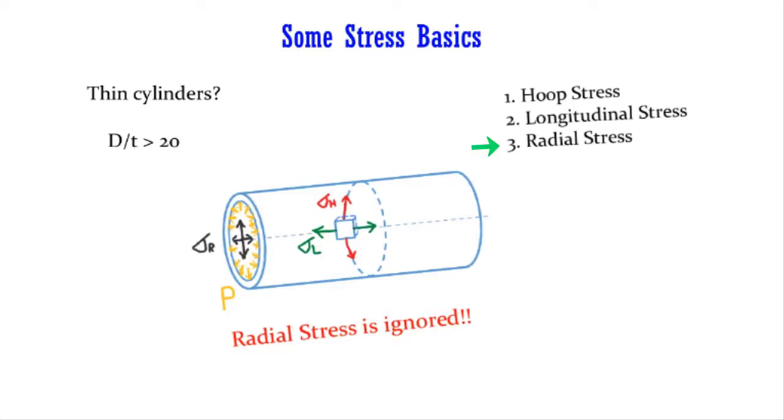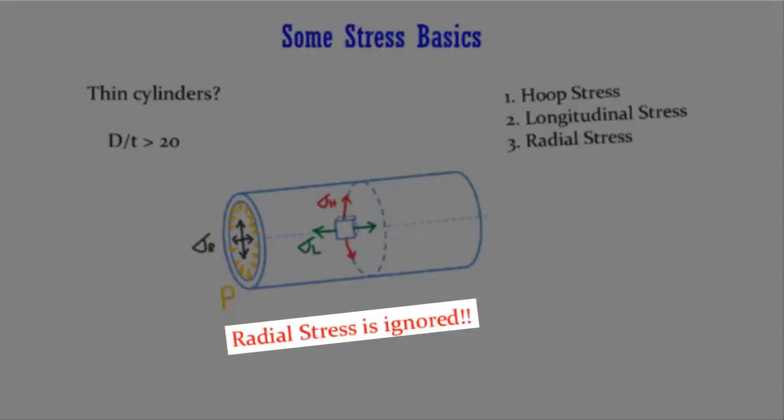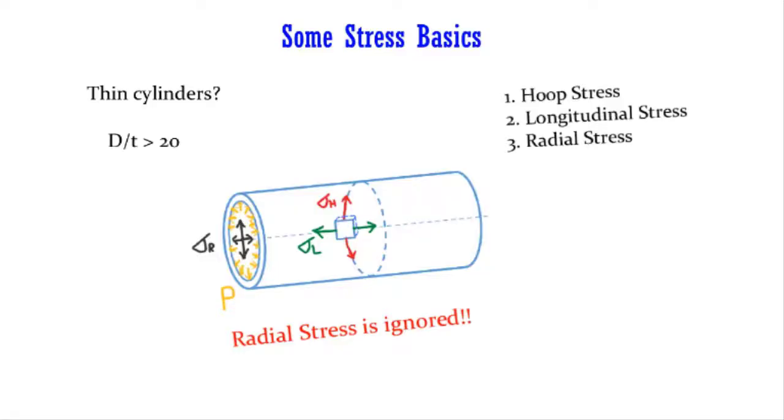And the third stress is radial stress that acts in the direction of radius. Its maximum value is equal to P on the inside wall of the cylinder. Practically, radial stress can be ignored for thin cylinders as its magnitude is far less than the other two stresses, and by this assumption it makes our case a two-stress state.